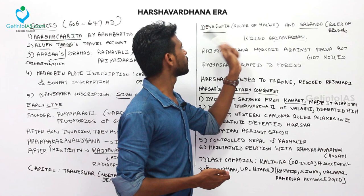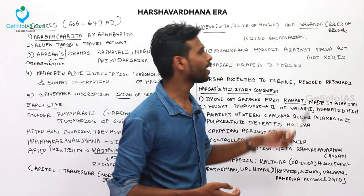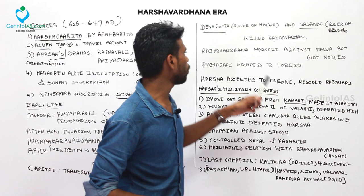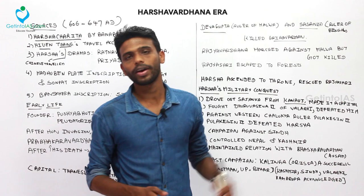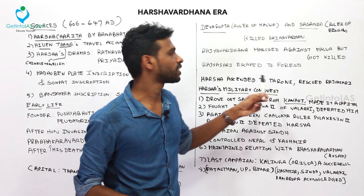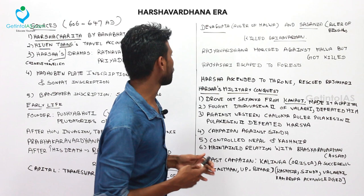Devagupta, ruler of Malwa, and Shashanka, ruler of Bengal, tied up together and waged war against Grahaverman and killed him, making his sister a widow. Rajya Vardhana then marched against Malwa but was killed on his return by Devagupta. To avenge all these things, Harsha Vardhana ascended the throne — he was the youngest brother of Rajya Vardhana.